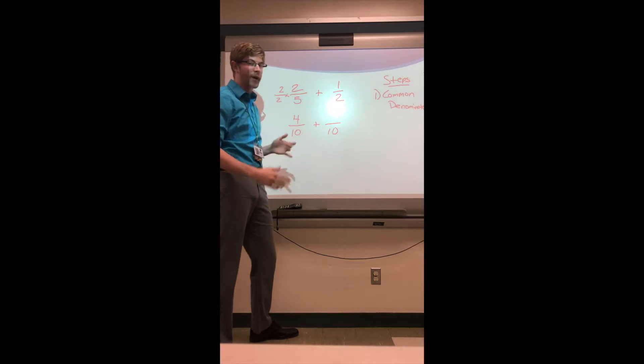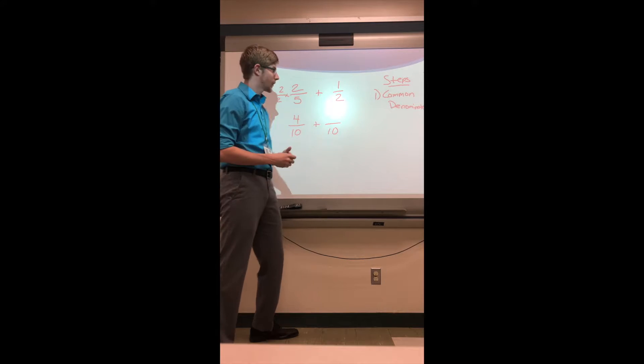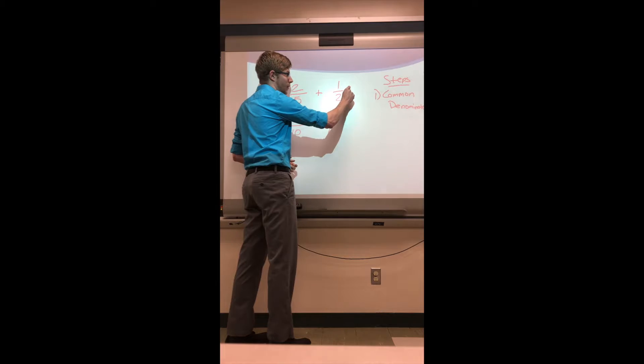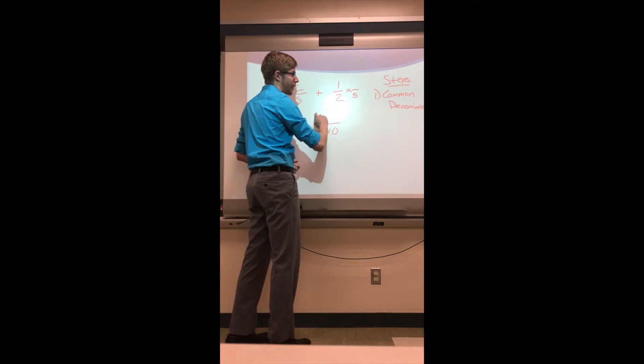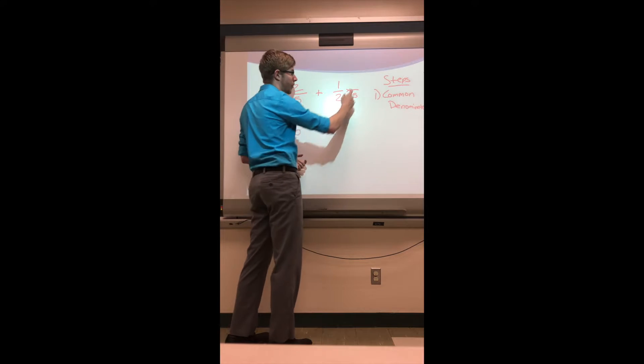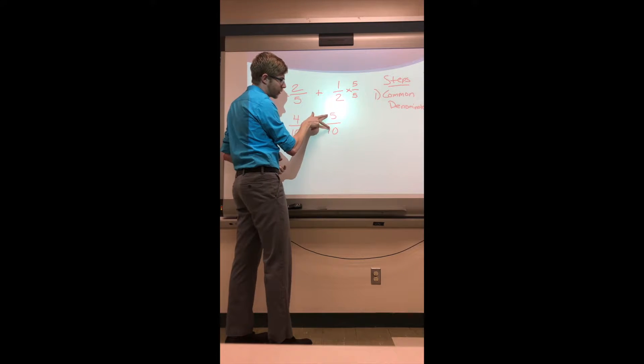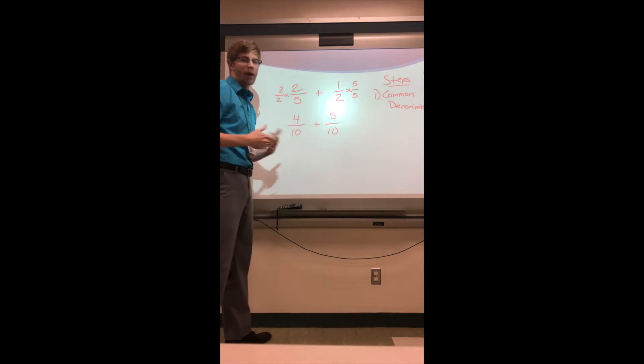Same thing over here. How did I get from two to ten? Well I did that by multiplying by five. So again, what I do to my denominator I have to do to my numerator, so five over ten. Just to double check, that reduces to one-half. I know that I've made my, got my common denominator correctly.